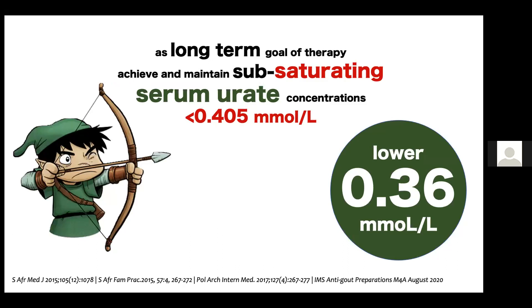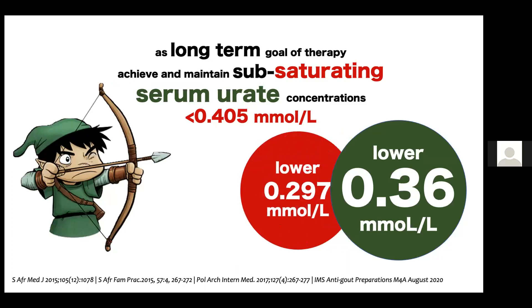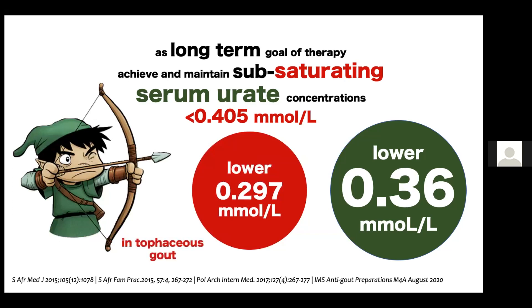When we treat, we treat to target. The target uric acid level is less than 0.36 mmol/L when the patient does not have tophi. If the patient has tophi, the target becomes 0.2 to 0.3 mmol/L.